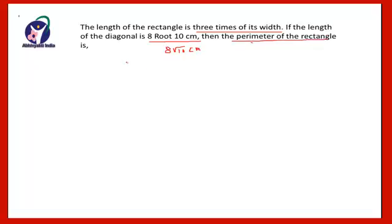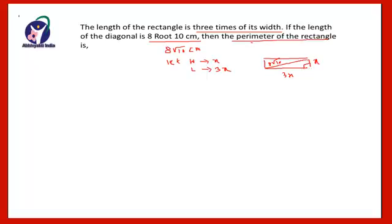Let the width of the rectangle be x. As per the condition, length is three times the width, so length = 3x. The diagonal is 8√10. Since this is a rectangle, the angle is 90 degrees and the triangle formed is a right-angle triangle, so we apply the Pythagorean theorem.